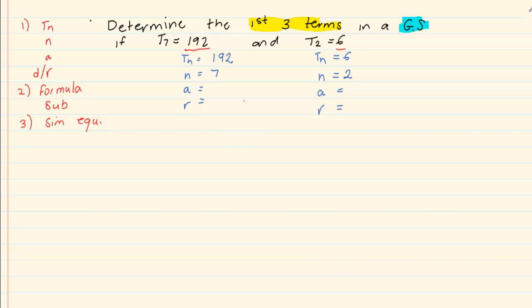Now we are going to work with our standard formula. Tn is equal to A times R to the power of N minus 1. Once we have filled in Tn and N, we are going to use our formula and substitute the information we have. Now for the first part of information, we have that Tn is equal to 192. So we have 192 is equal to A times R to the power of 7 minus 1.